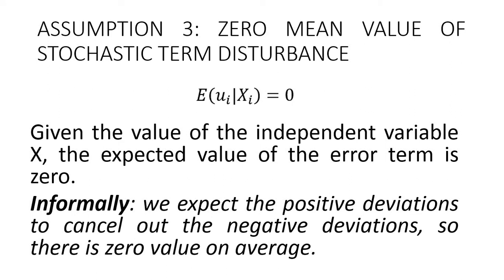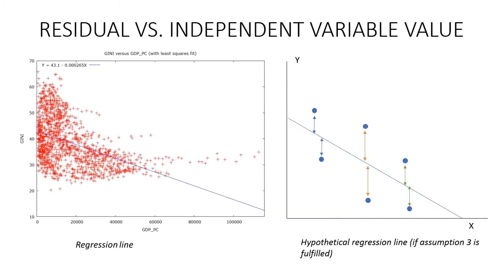The third assumption states that there is zero mean value of stochastic term disturbance. Again I will explain. So it means that expected value of residual, E(ui|Xi), is equal to zero. Informally, we expect positive deviations to cancel out negative deviations, so the average is equal to zero. Okay, I will explain.